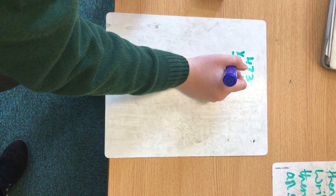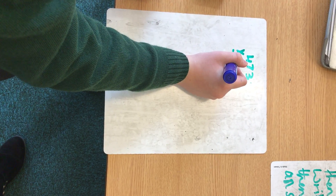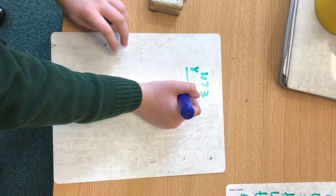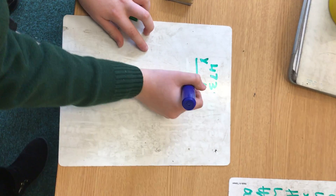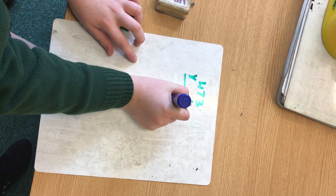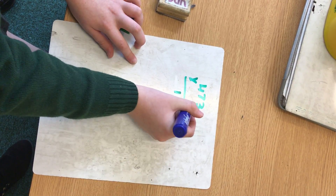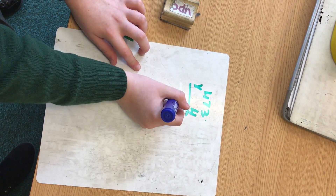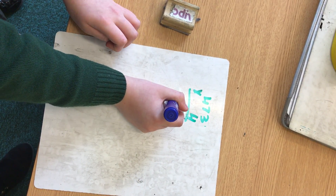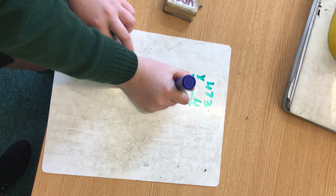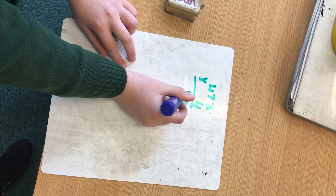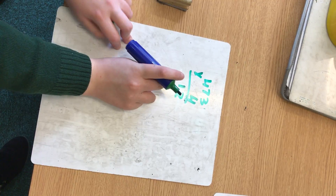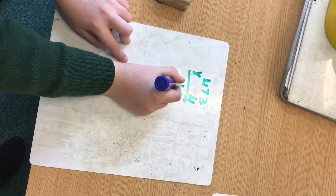To do column multiplication, you need to times the ones by four, which equals twelve. Then you need to do seventy times four, which is the same as seven times four, which equals twenty-eight, then times by ten, which equals two hundred and eighty. So we need to put it here.